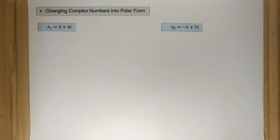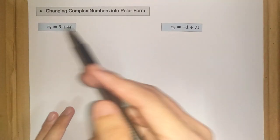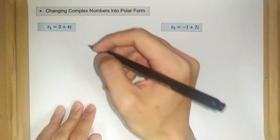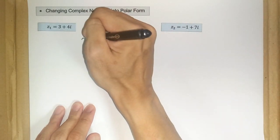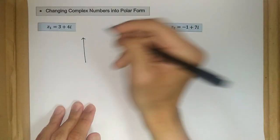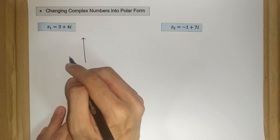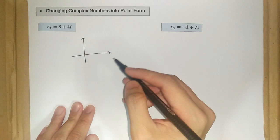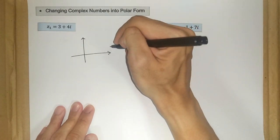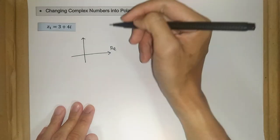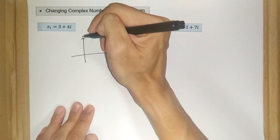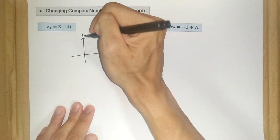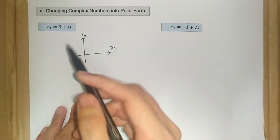So 3 plus 4i can be plotted in our Argand diagram like this. So we have our Argand diagram with vertical and also the horizontal axis. The horizontal axis represents the real part of our z and the vertical axis is for the imaginary part of our complex number.